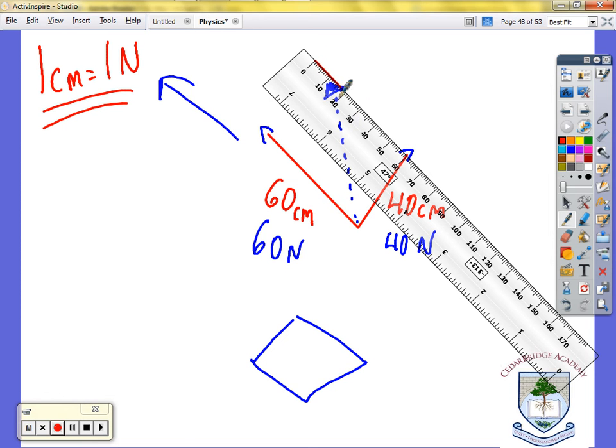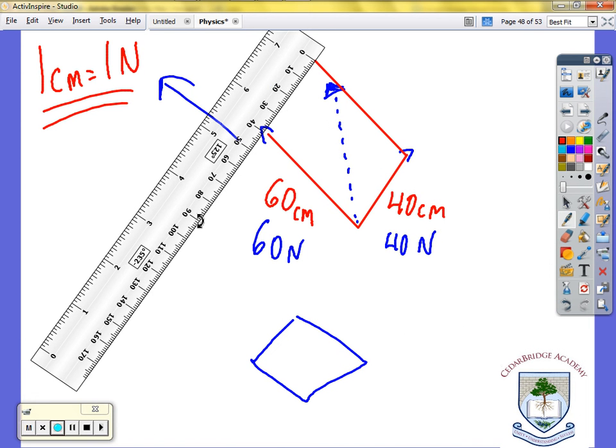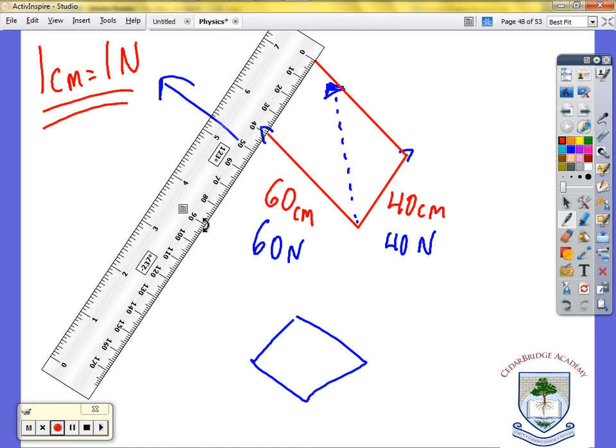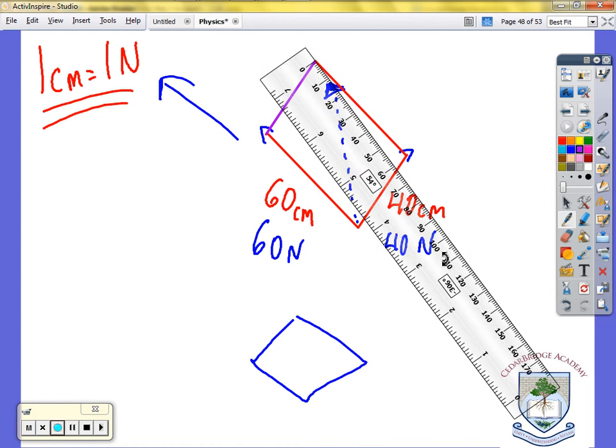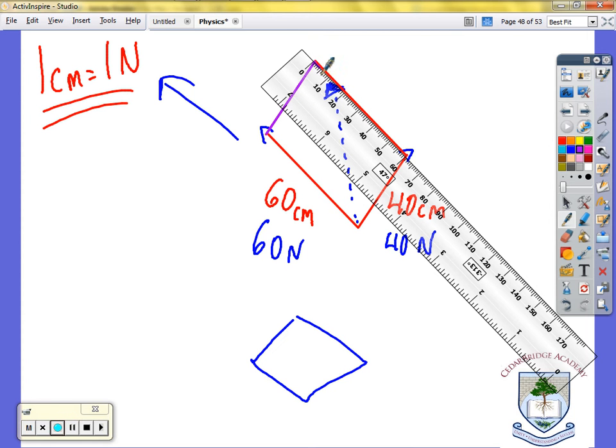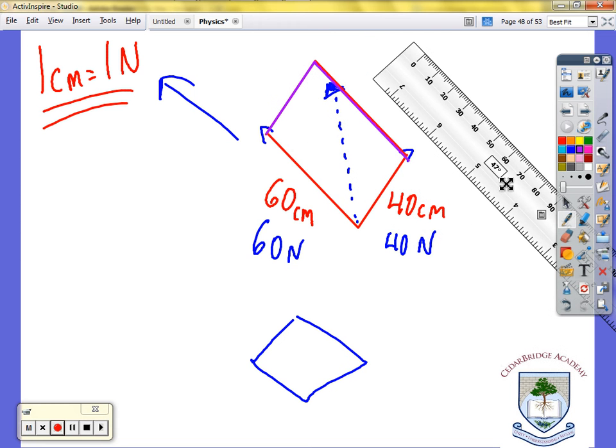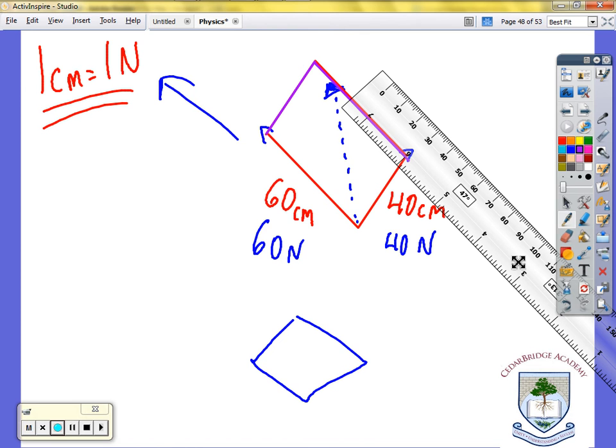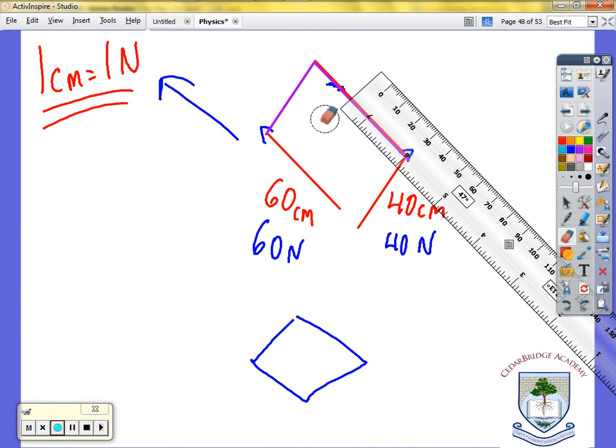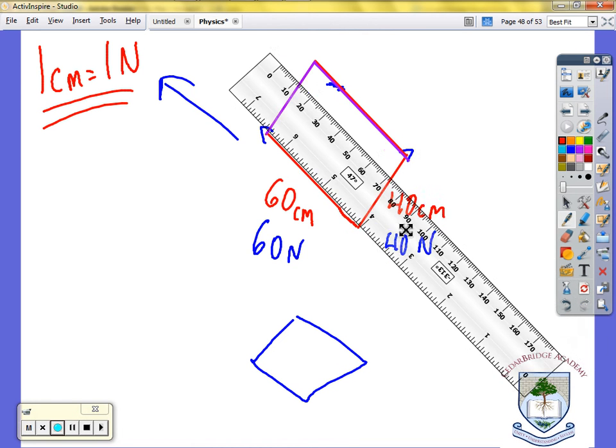You're gonna find the 60 and connect and draw your line. And then for the other one, you find the 40 and then you connect. So now you've created this shape that's effectively a parallelogram. And your resultant force is going to be when you connect your corners together.